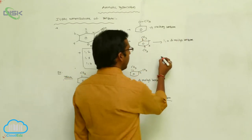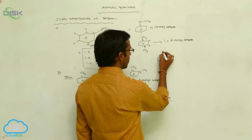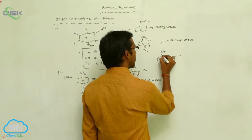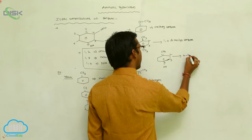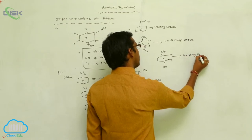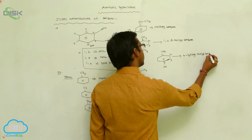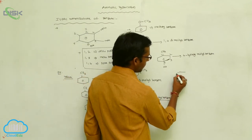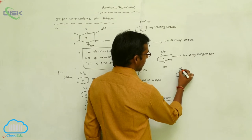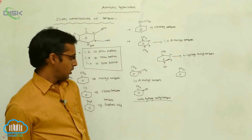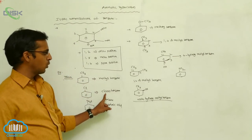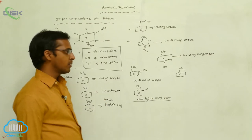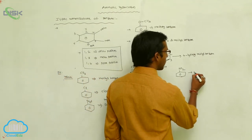Next, if a methyl group is the substituent and an OH group is also present, the positions are 1, 2, 3, 4 — so this is 4-hydroxymethylbenzene. If the substituent is an NO₂ group, that is a nitro compound. The secondary prefix for chlorine is chloro, and for NO₂ it is nitro. So the compound is called nitrobenzene.